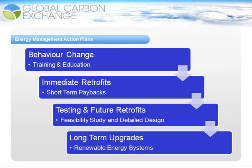Energy management action plans can be seen as four different levels, each with varying cost implications. The first level is behavior change. By encouraging behavior change in an organization, you can create low-cost, long-term energy savings. The only way to create real, tangible behavior change is through training and education, which empowers staff at a facility to reduce energy consumption — because once they know the impact their behavior has on cost and the environment, meaningful change follows.